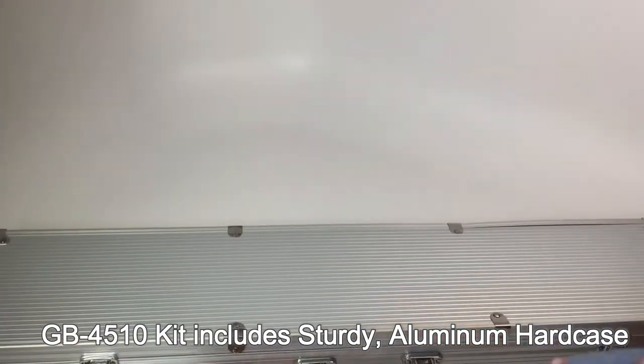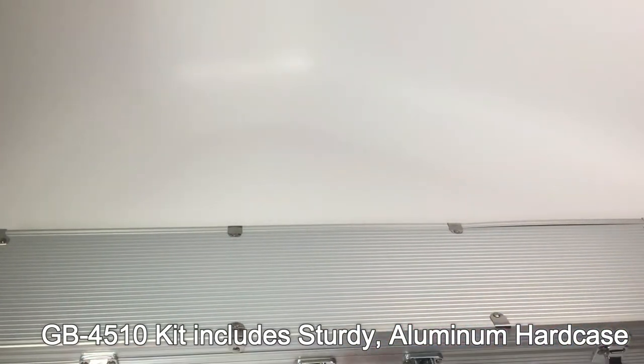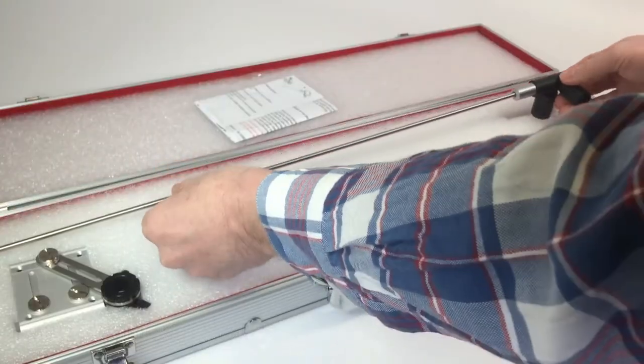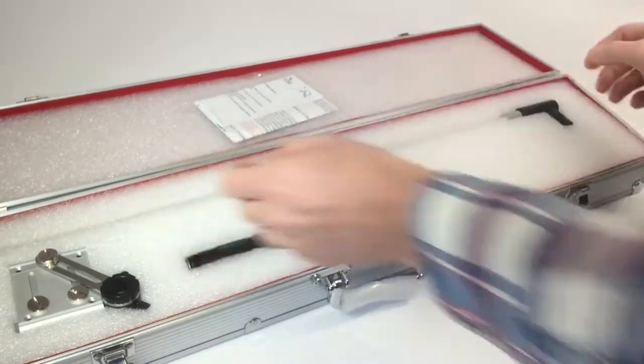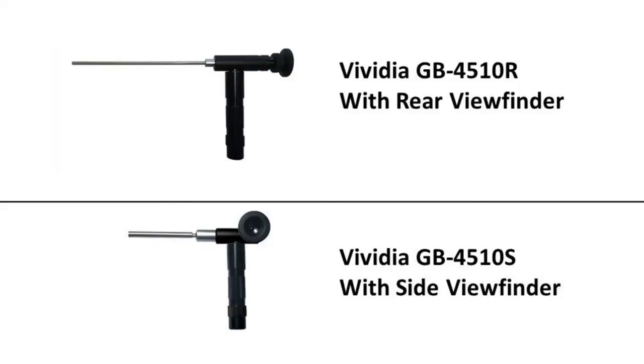The GB4510 comes with a sturdy protective aluminum hard case for easy storage and portability. There are two models available to choose from which feature either a side or rear viewfinder.